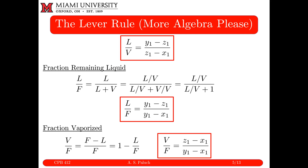As temperature increases, y₁ decreases — the composition of the most volatile component in the vapor phase goes down — but the amount of vapor coming out increases. This is a trade-off: high concentration in the vapor phase corresponds to a low vapor flow rate, and a high vapor flow rate corresponds to a lower vapor concentration.